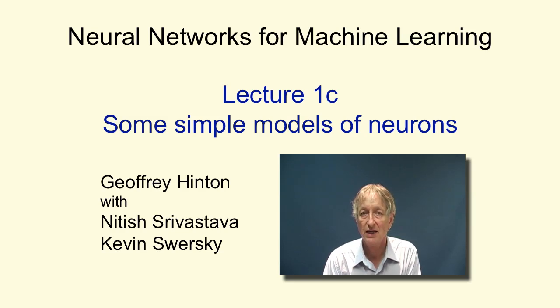In this video, I'm going to describe some relatively simple models of neurons. I'll describe a number of different models, starting with simple linear and threshold neurons, and then describing slightly more complicated models. These are much simpler than real neurons, but they're still complicated enough to allow us to make neural nets that do some very interesting kinds of machine learning.